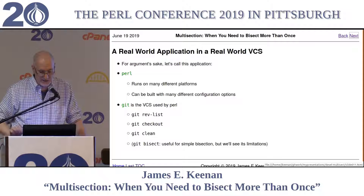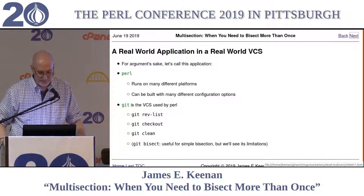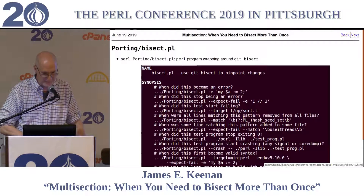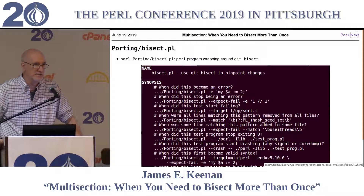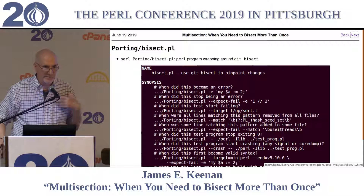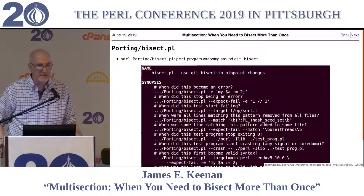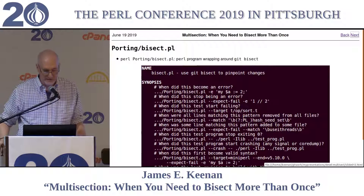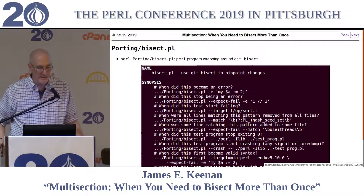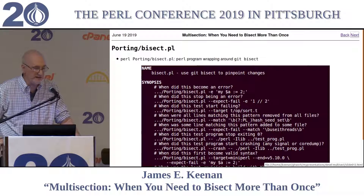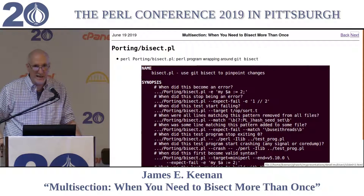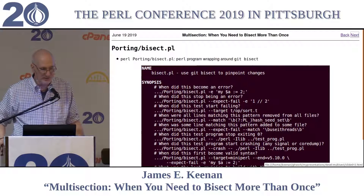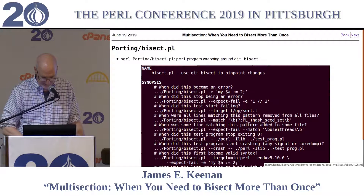There's GIT BISECT — it's useful for simple bisection, but we'll see its limitations. I'm a member of the PIRL 5 Porters, the group that maintains the PIRL 5 core distribution. In the core distribution, we have a program called Porting BISEC.PL — a PIRL program originally written by former Pump King Nick Clark. It's essentially a nice wrapper around GIT BISECT to handle many of the situations we typically face.